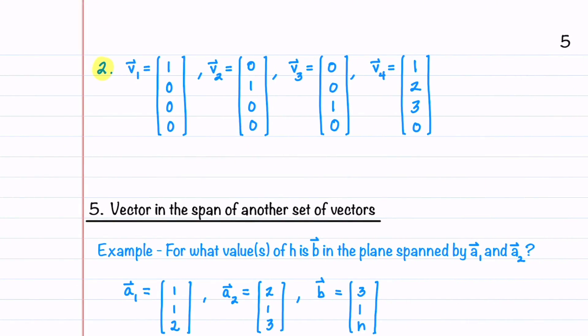In our second example, we're given four vectors in R4. We can notice without even forming a matrix that we will have three pivots, or three linearly independent vectors. This tells us that the geometric description of the span of these four vectors is a 3D subspace of R4.